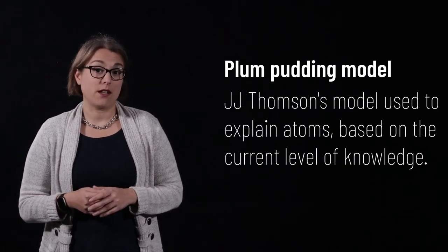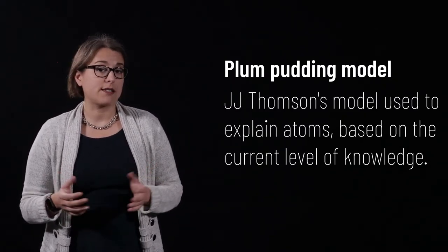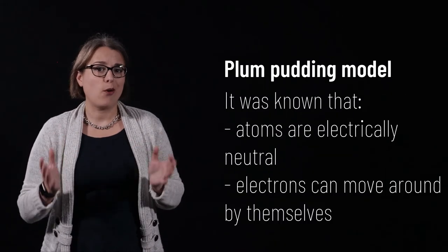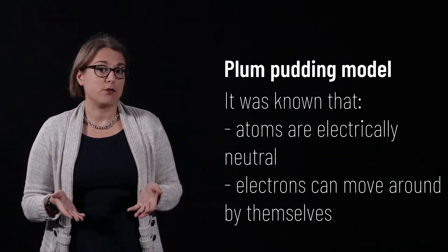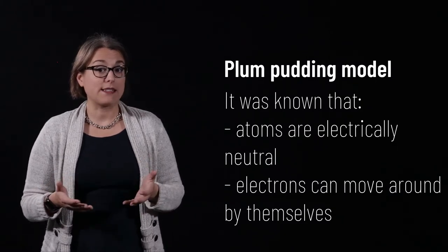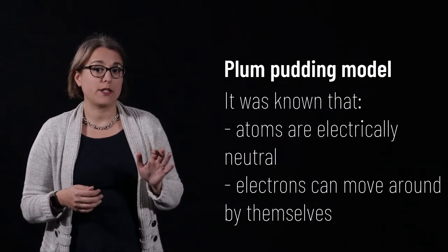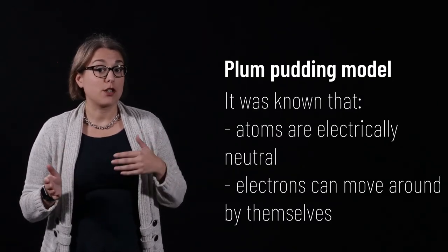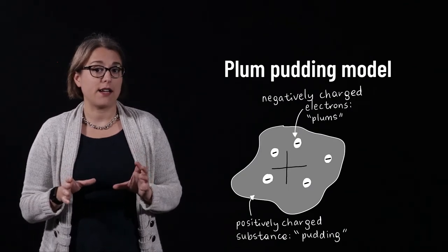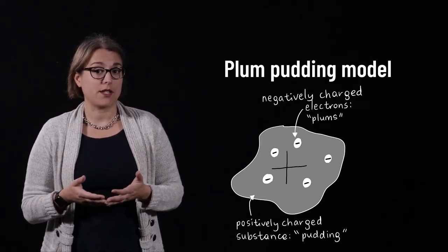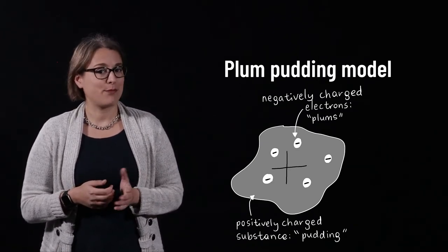J.J. Thompson's model, known as the Plum Pudding Model, attempted to explain how atoms worked based on this knowledge. On the whole, it was known that atoms were electrically neutral. If they weren't neutral, then all atoms would be attracted together due to electric forces. It was also known from the cathode ray tube experiments that electrons could move around by themselves. The Plum Pudding Model hypothesized that an atom was made of a positively charged substance, pudding, that contained mobile electrons, plums.